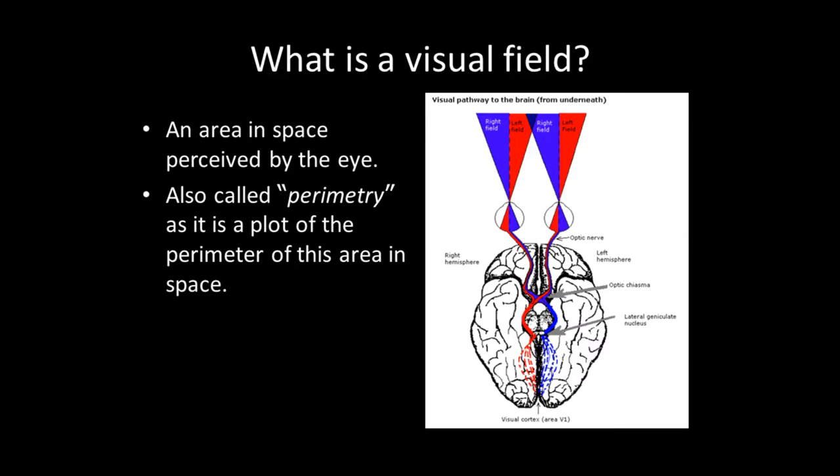You can actually map out a person's visual field by determining the boundaries of the field, or how sensitive a point anywhere across the field is to light. This technique is called perimetry, and it's a technique that we teach orthoptic students as part of their course.